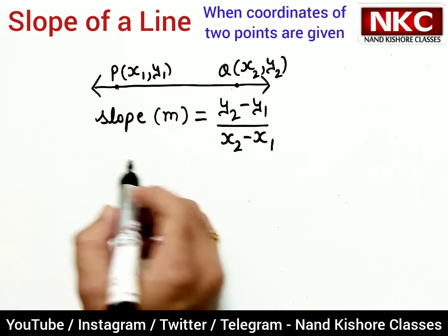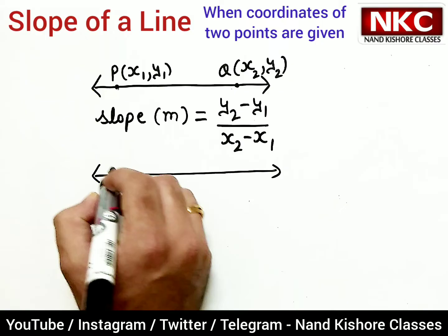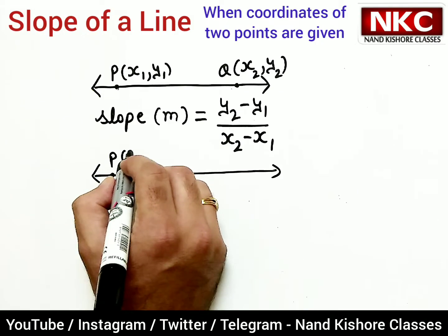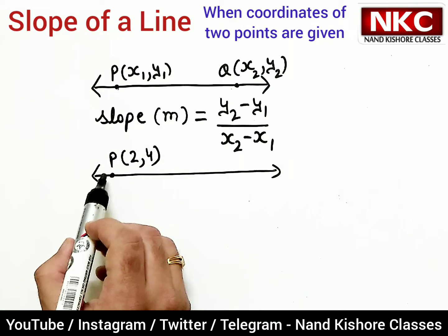Now let's suppose we have a line where these coordinates are given. Let's suppose point P is given with coordinates 2 and 4. This is the coordinate of point P.